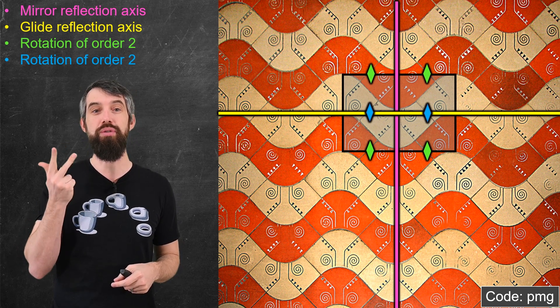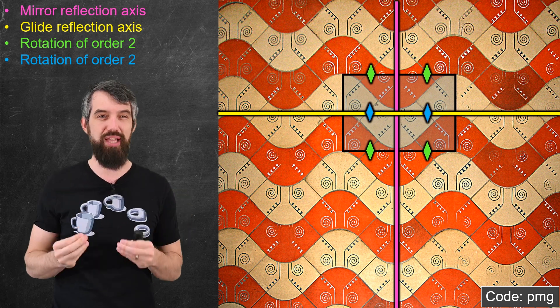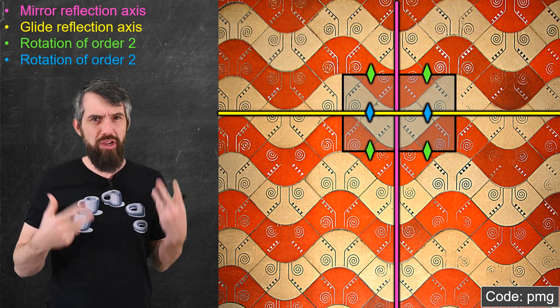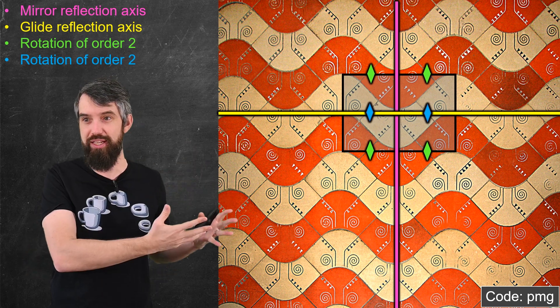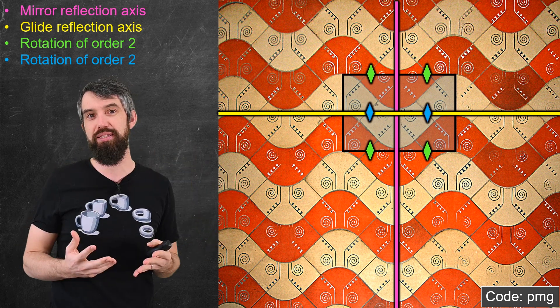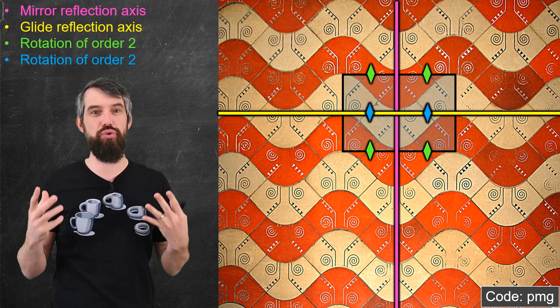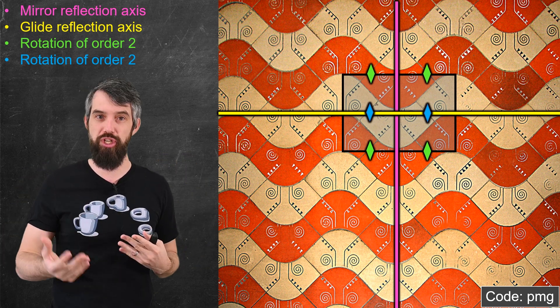But the point is that things of the PMG classification always have this particular pattern of a mirror reflection, a glide reflection, and two different distinct rotational centers of order two. I could re-draw the details of this particular thing, it doesn't have to look visually this way, it has different colors, different designs. But it's the symmetries that I am identifying under this code PMG.